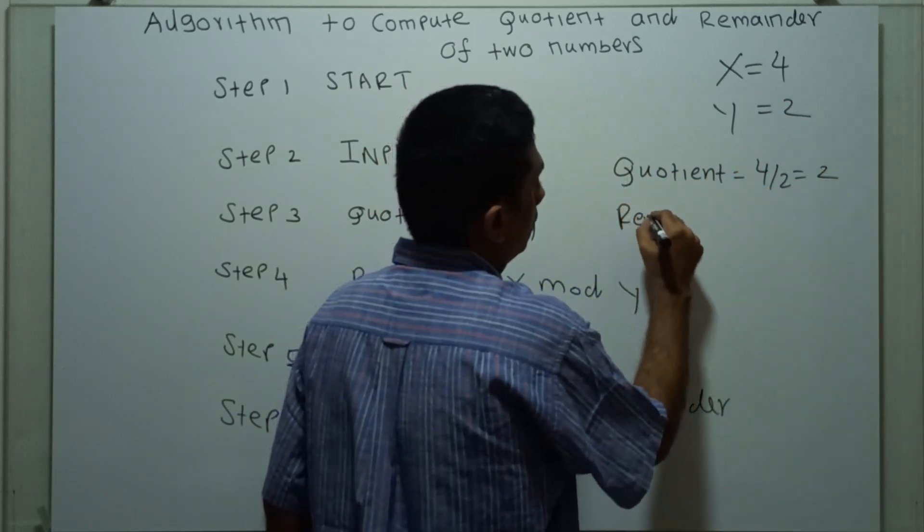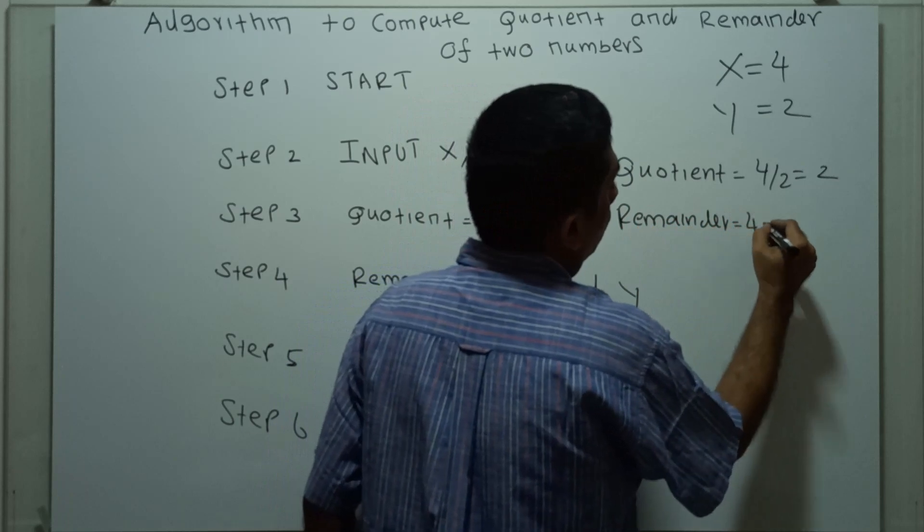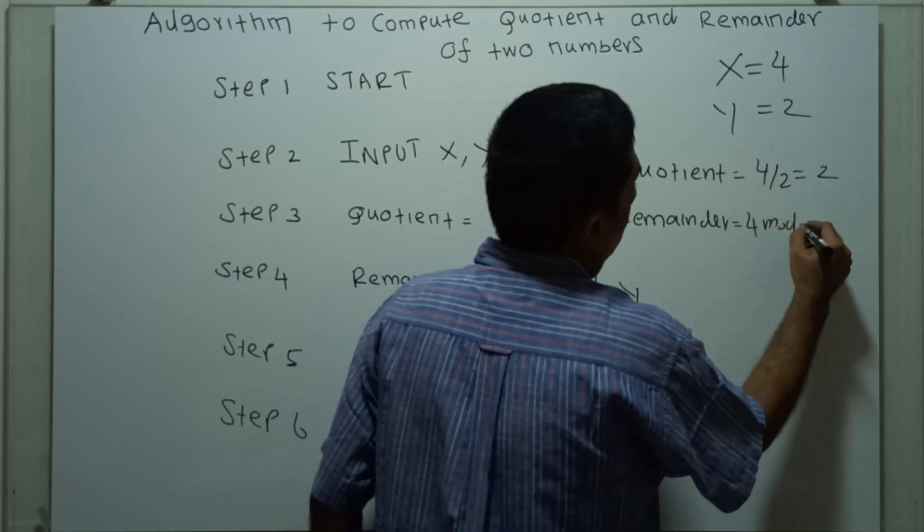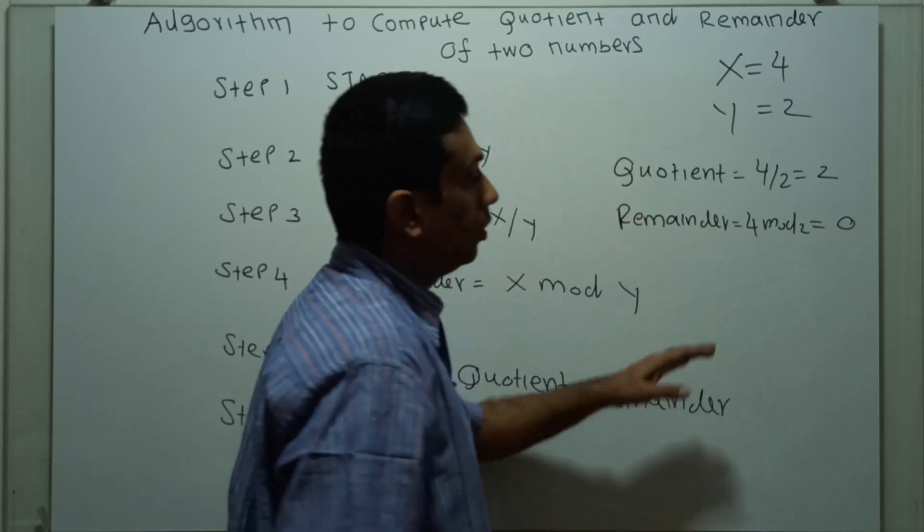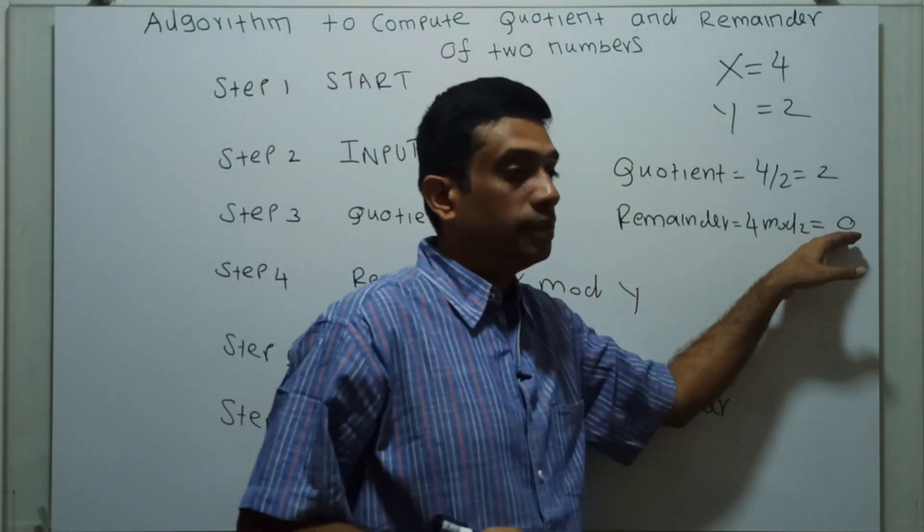Remainder equal to 4 mod of 2. That is equal to 0. When you divide 4 by 2, the remainder is 0.